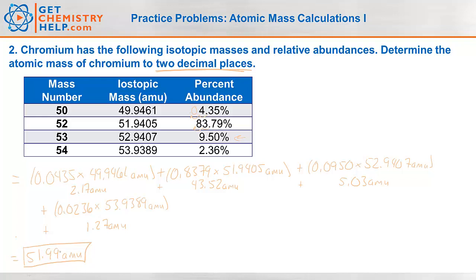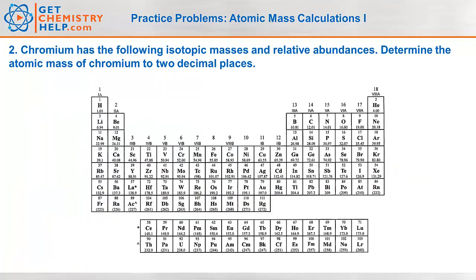And one last check that we could do is actually just pull out our periodic table and see what the actual mass is for chromium. So let's go over here and look. So chromium has a mass of 52.00 which is pretty close to 51.99. So our calculation must be correct.